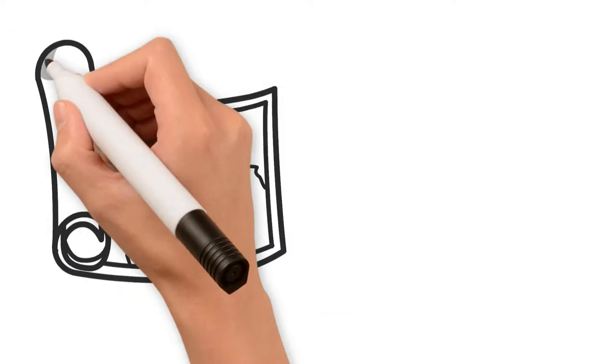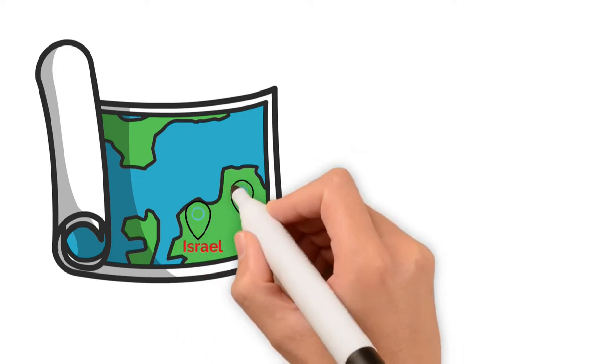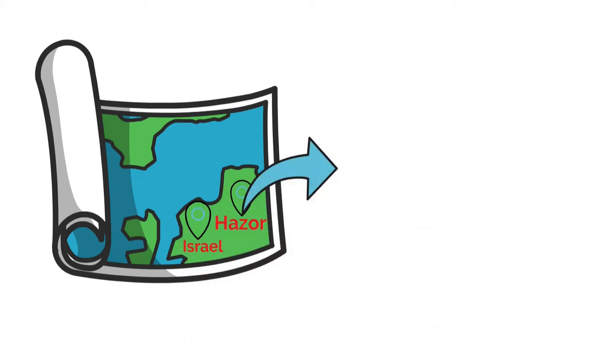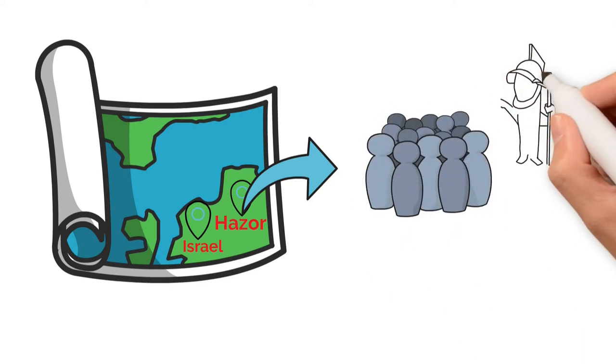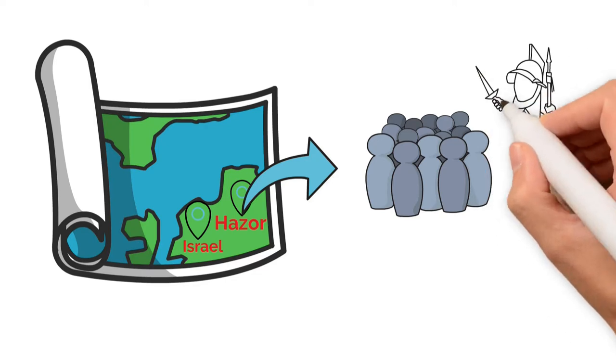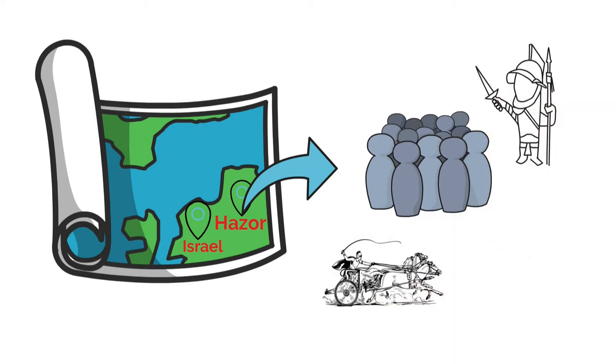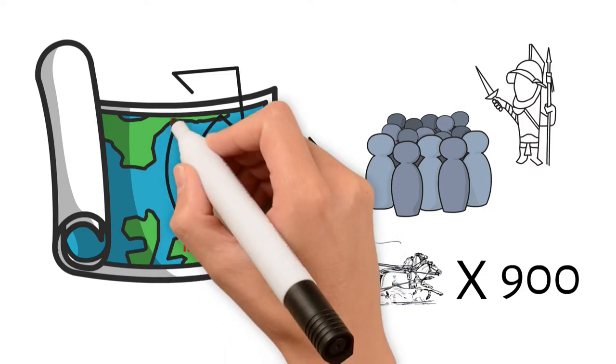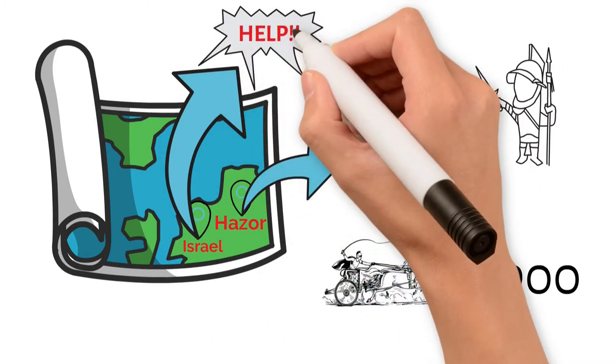In those times, there used to be a city near Israel called Hazor. Their army was enormous, and they were enemies of Israel. Their commander, Sisera, was a bad man, and he had 900 iron chariots. This army had been oppressing the sons of Israel for 20 years, and the people cried out to God for help.